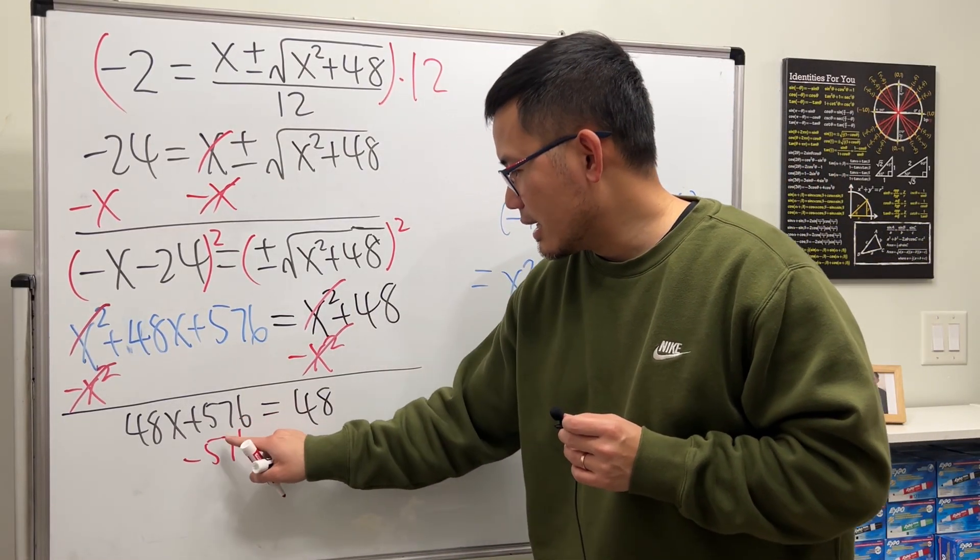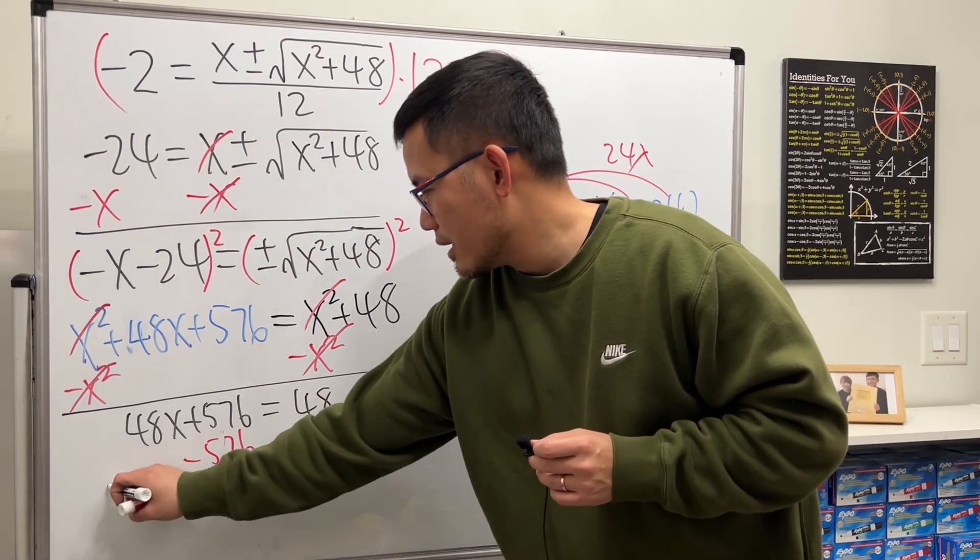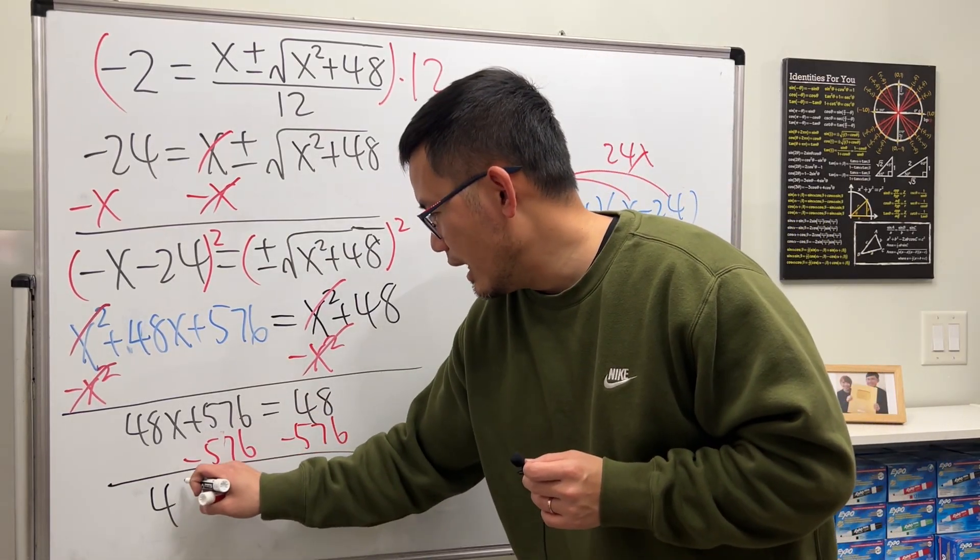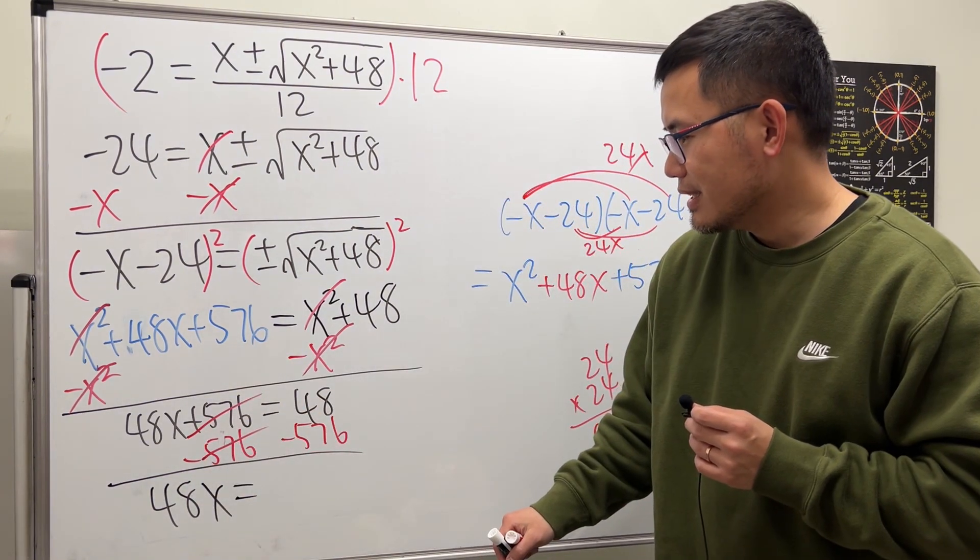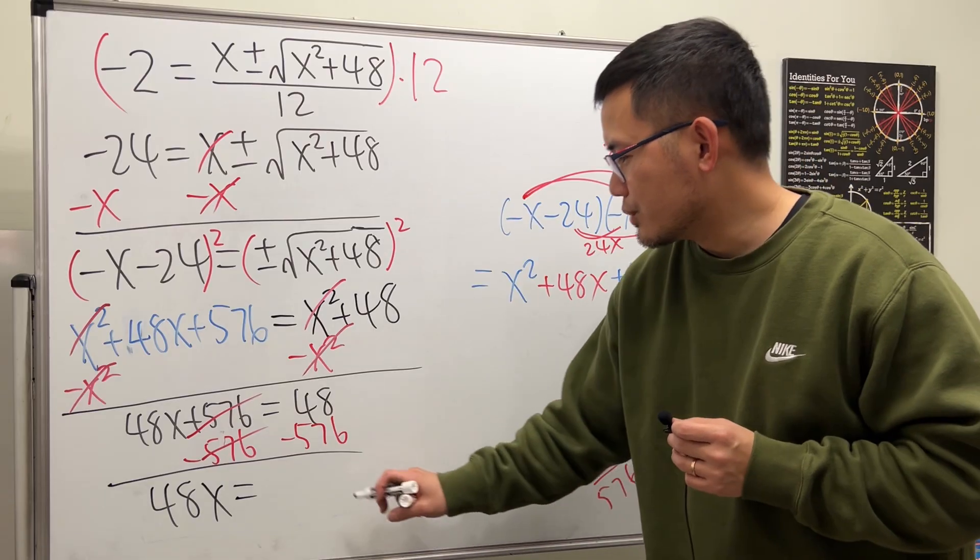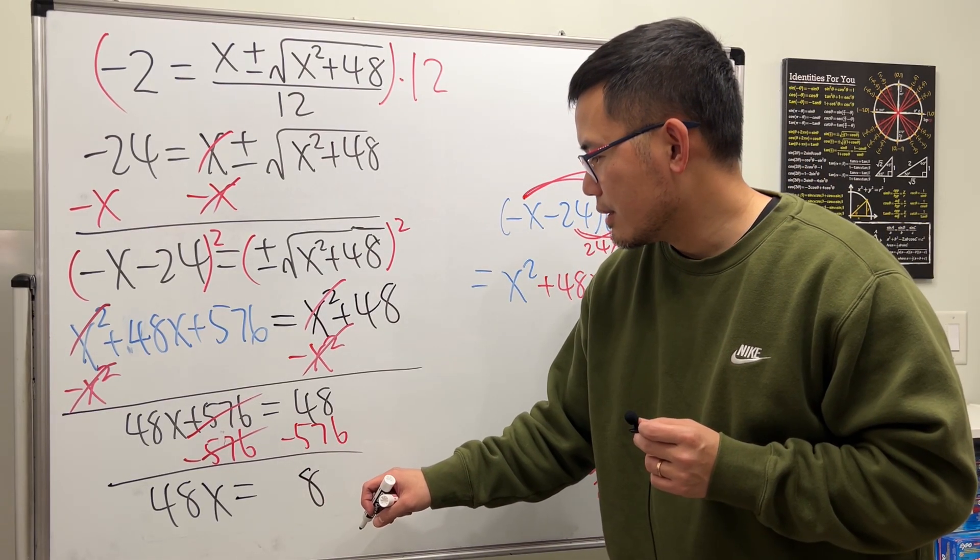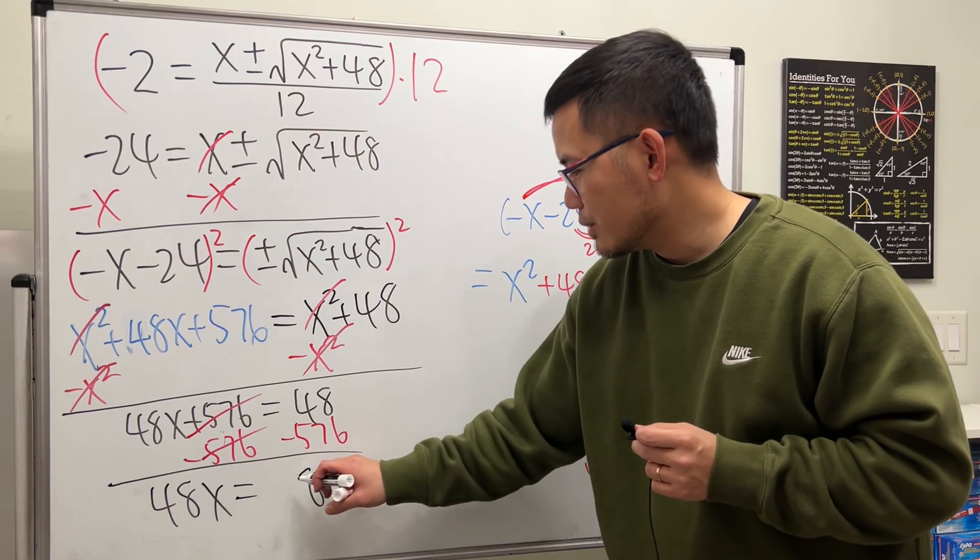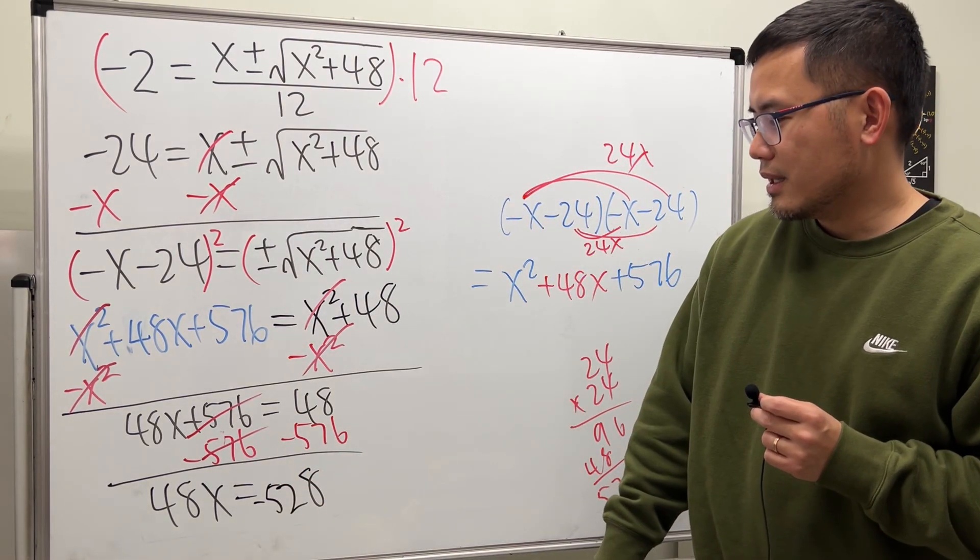Minus 576 on both sides. Okay, and we get 48x equals 76, which will be 8, and then 2, and then 5. Negative 528.